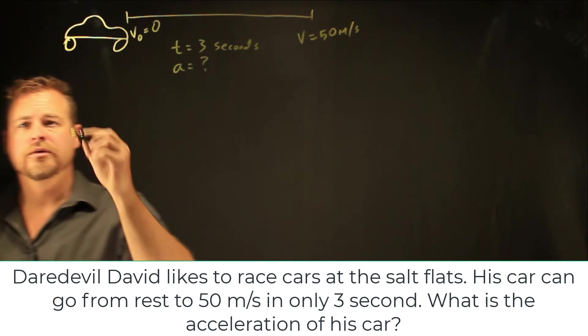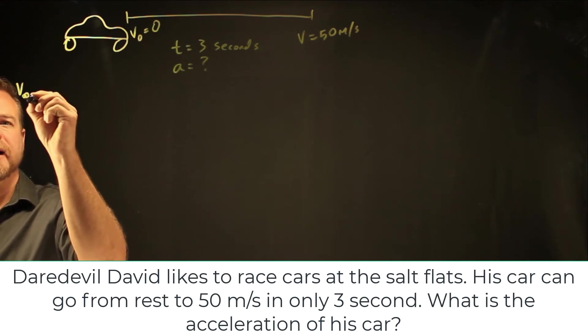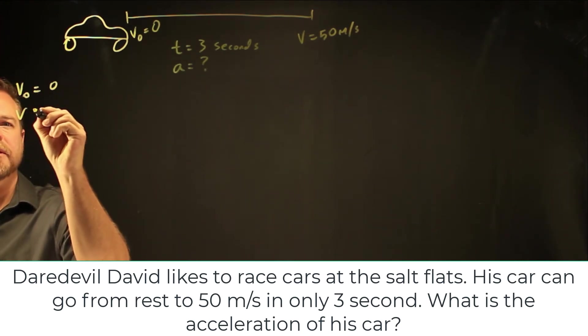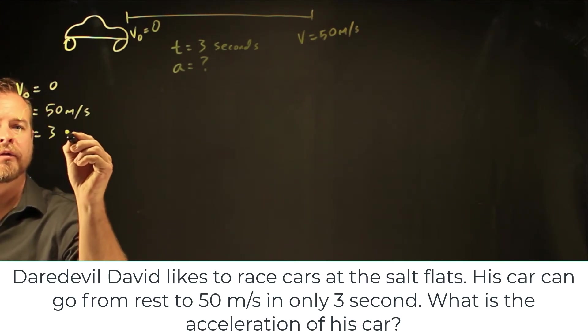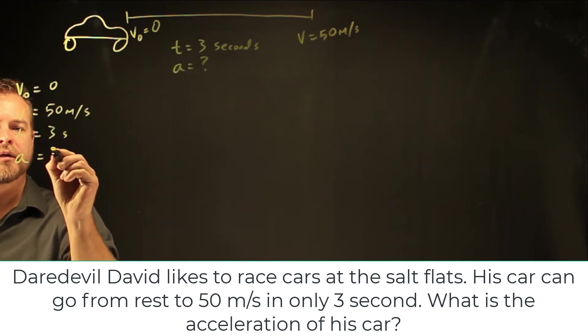Okay, so next we collect variables. V naught was zero. V is 50. T was three seconds. And A is what we're looking for.